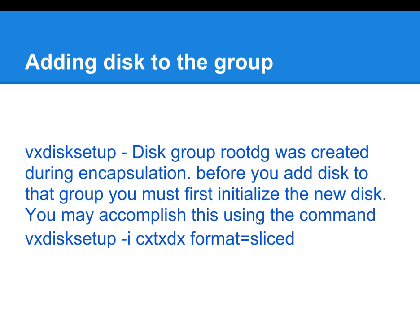The disk group root DG was created during the encapsulation. Before you add the disk to the disk group, you must first initialize the new disk. You may accomplish this using the command VxDisk setup -i, the device name, format, and slice. There are two types of formats: CDSDisk, which ensures the disk can be imported from server to server, and the slice format, which is the option you want to choose in order to perform a root mirror.